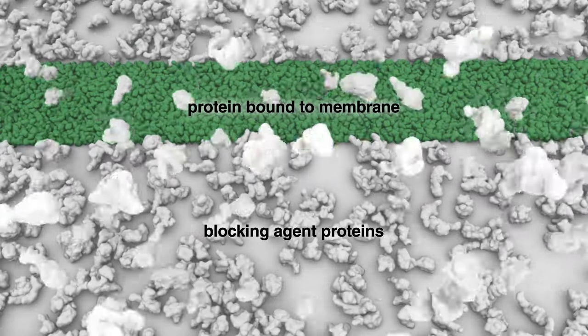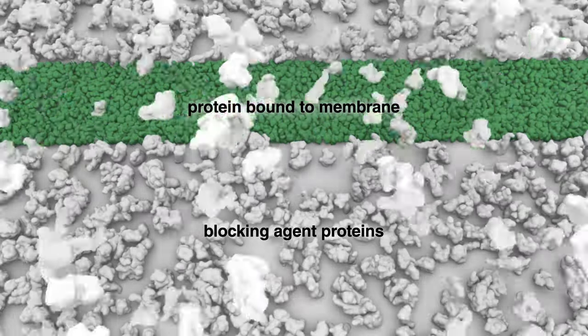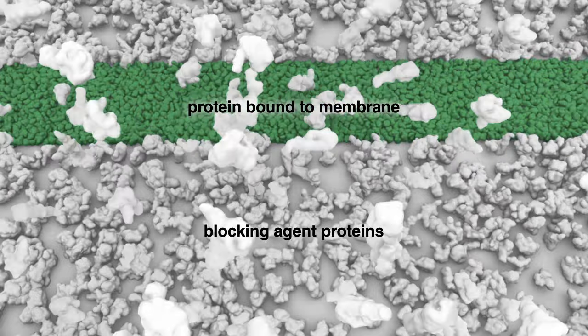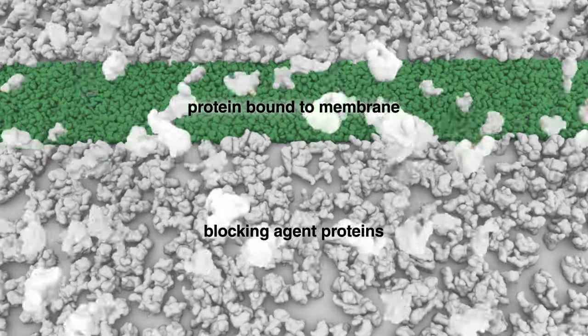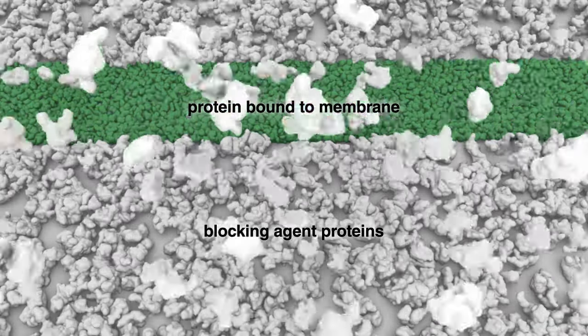Proteins within the blocking agent will bind to the areas within the membrane that are not already occupied by bound proteins, preventing nonspecific binding of antibodies in subsequent steps.